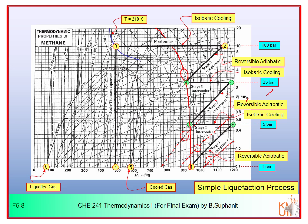Point D falls on the isentropic line at entropy 5.5, so you follow that line to the final pressure in the third stage — point two at 100 bar (10 MPa). From point two, the gas is cooled in the final cooler isobarically to 210 Kelvin — you interpolate between the 200 and 220 Kelvin isotherms — giving point three, the cooler exit.